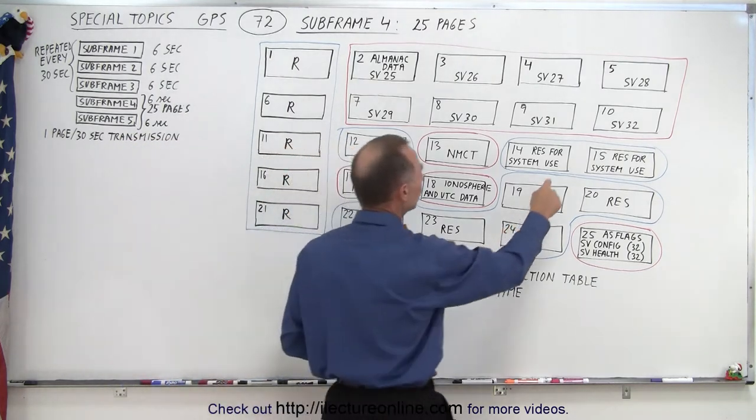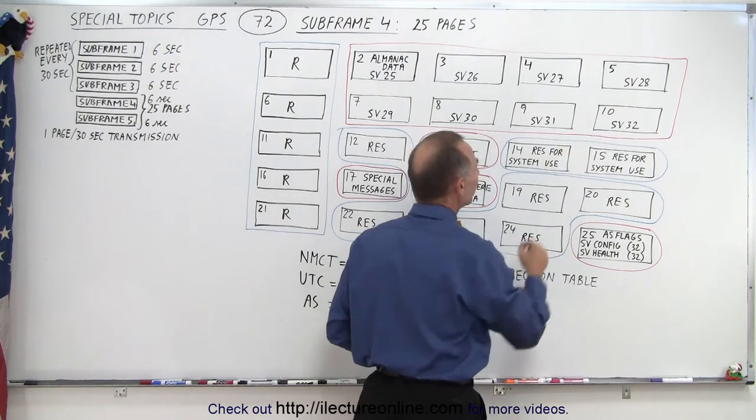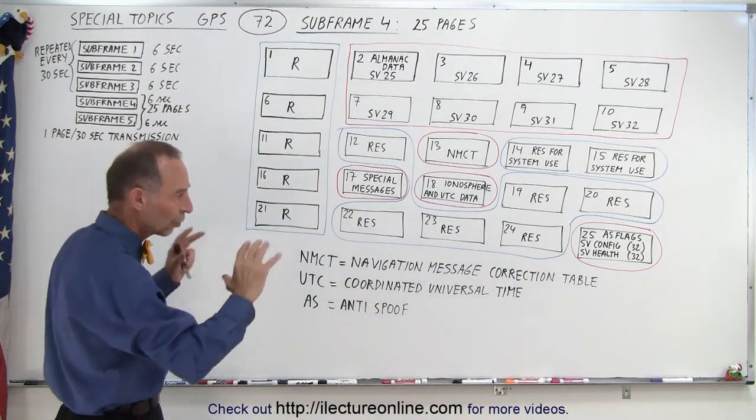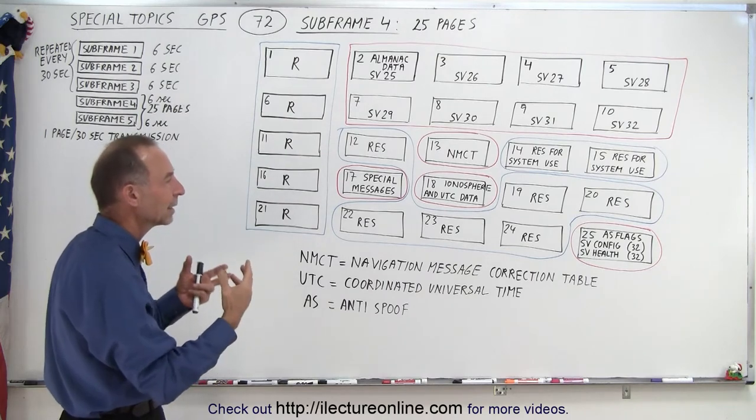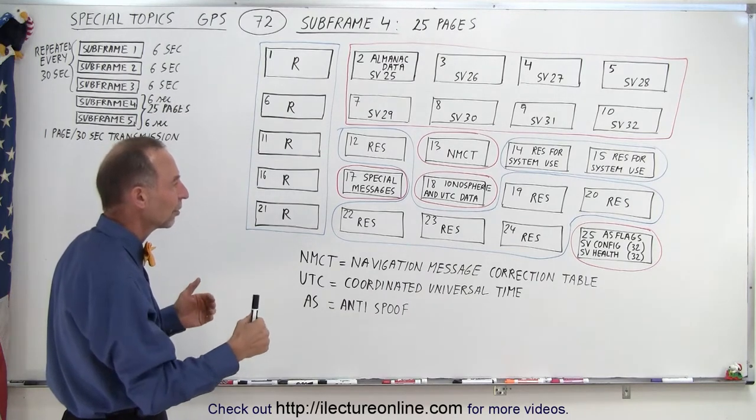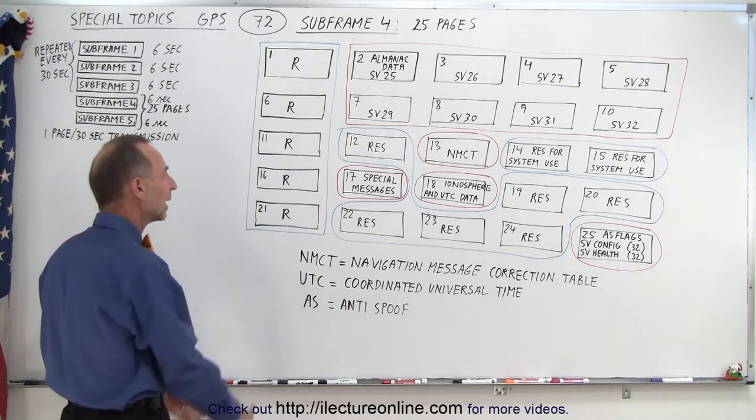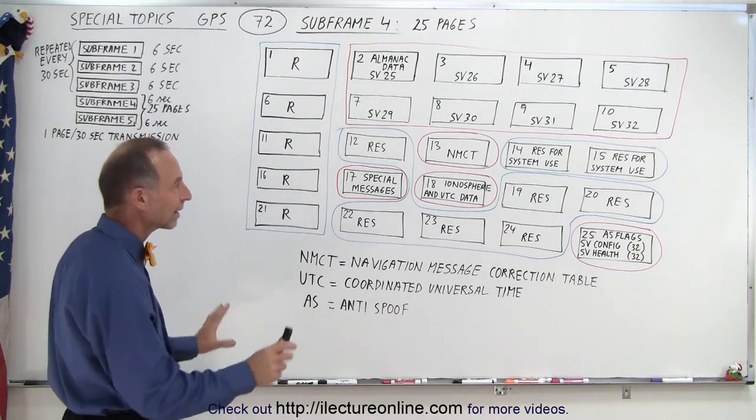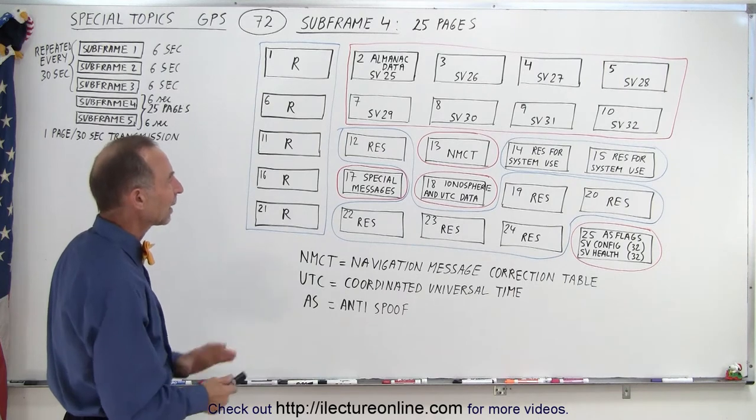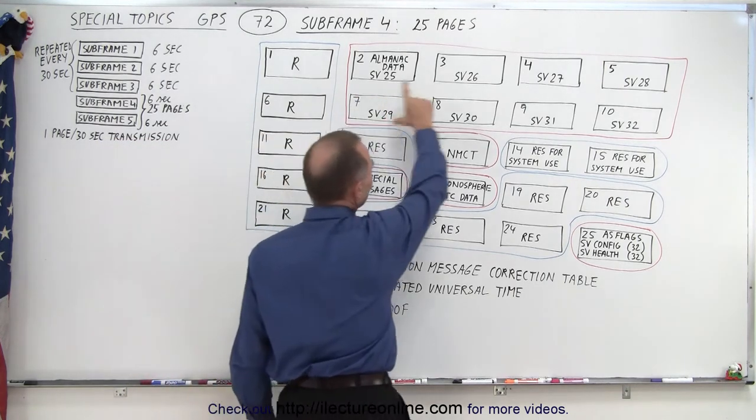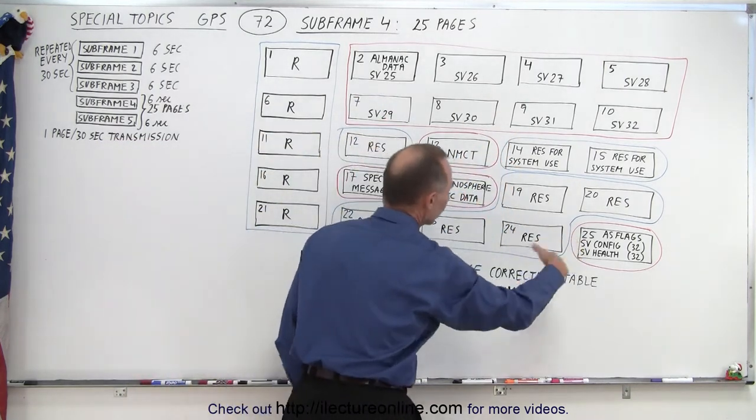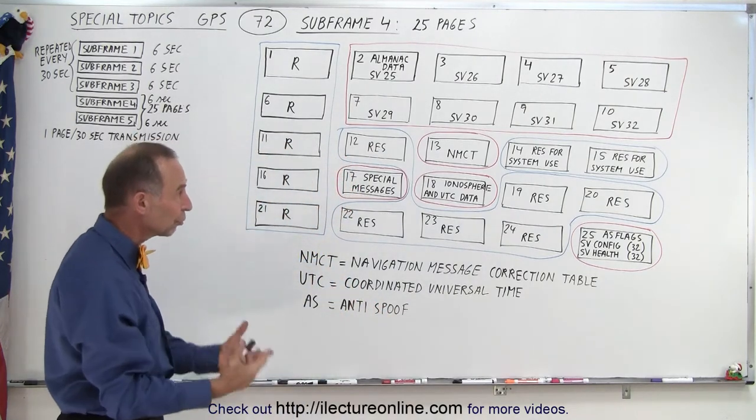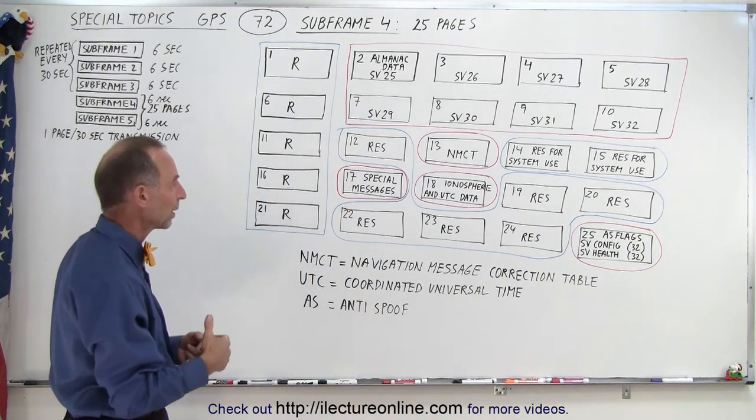And then we have a third block for page 14 and 15, which are also reserved for specific system use. So those are reserved to put in whatever data the users of this need. And so we have no privilege to know what's inside that reserved data. That leaves us with a block of 8 plus another 4 for a total of 12 pages out of the 25 that have useful data that we require.